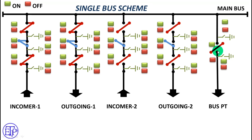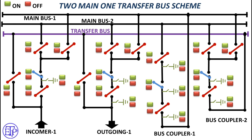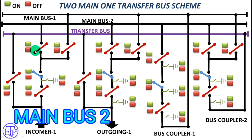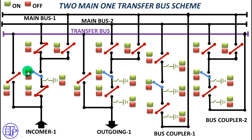Now we will see the most important and interesting busbar scheme — that is the two main and one transfer scheme. Here you will see all the criteria, like there is insignificant change of current. Breaking or making of bus PT implies an insignificant current change. In this section, we will see how the isolator is operated when there is the same voltage at two terminals of the isolator poles. Suppose we have to close incomer 1 to main bus 1 — we will first close this isolator, then this isolator, then close this circuit breaker. This incomer has been connected to main bus 2.